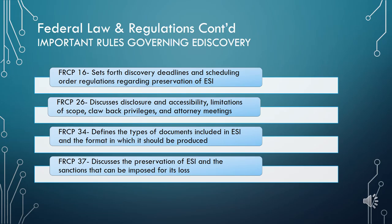Rule 34(a) states that ESI includes writings, drawings, graphs, charts, photographs, sound recordings, images, and other data compilations stored in any medium from which information can be obtained or translated. It also requires the producing party to allow the requesting party to copy, test, and sample ESI. Rule 34 also regulates the format in which ESI must be produced. The last big change is in FRCP 37, which discusses sanctions for lost ESI. The rules are based on whether the ESI was lost resulting from good faith operations of an electronically stored information system or from neglect.